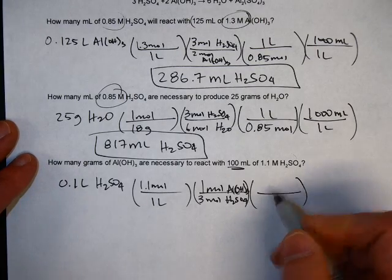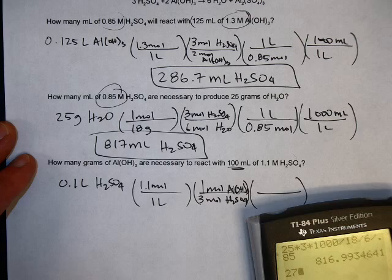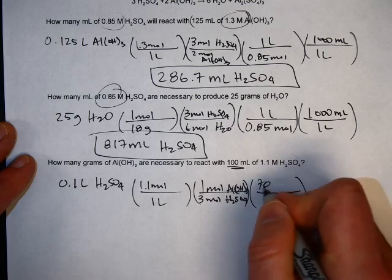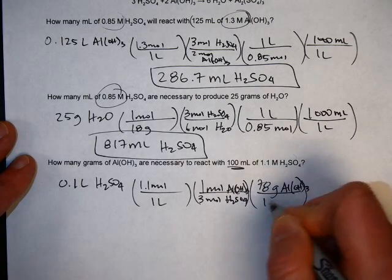When you're answering grams, put the molar mass of aluminum hydroxide up here which is, let's see, 27 plus 17 times 3, 78. 78 grams of Al(OH)3 in one mole.